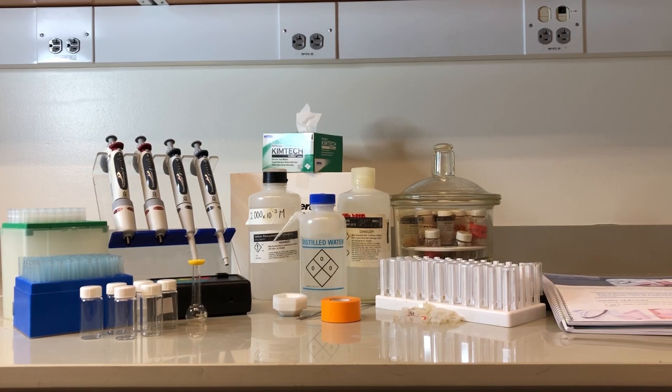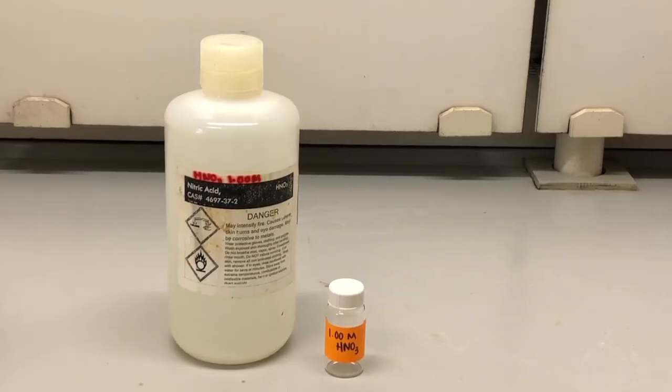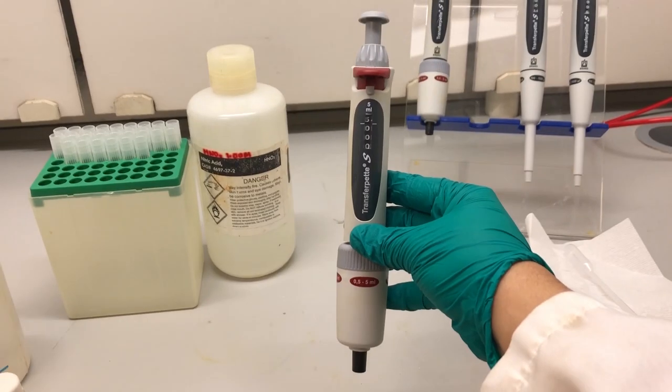This experiment will be performed in two parts. 15.1 is to create a calibration curve which will enable you to determine the concentration of iron thiocyanate. To begin, we must get our solutions ready. We will prepare a 1-dram scintillation vial with 15 ml of 1 molar nitric acid. This nitric acid will be located in the chemical fume hood.